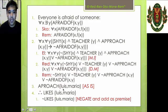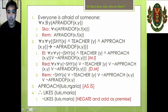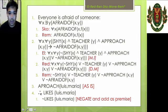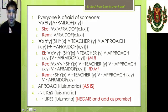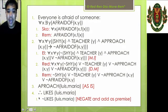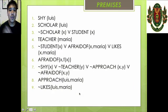Next, Luis tries to approach Maria — nothing to do here, we retain it. Then Luis likes Maria — that's the conclusion. Before we perform resolution, we need to negate the conclusion: it's not the case that Luis likes Maria. We add this as a premise, and now let's proceed to resolution.